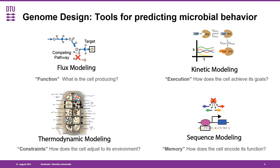The last toolbox that we're currently developing is sequence modeling, where we're building machine learning models that utilize the DNA sequence itself to determine how the cell encodes its various functions within its DNA. For example, we have developed models that can determine how a mutation to a gene's promoter will affect the expression of the gene. In addition to these four toolboxes, we also employ other analyses, such as protein structural analysis, in our work when it's necessary.